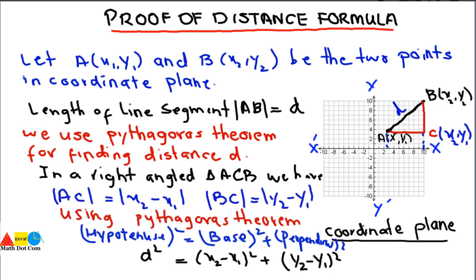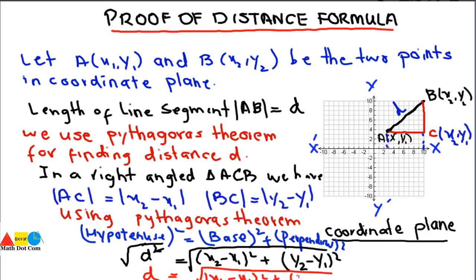Now we have to isolate d. Taking the square root on both sides, we get d equals the square root of (x2 − x1)² + (y2 − y1)². When we take the square root we get two values, plus and minus. Since distance is always greater than zero, we ignore the negative value and consider only the positive result.